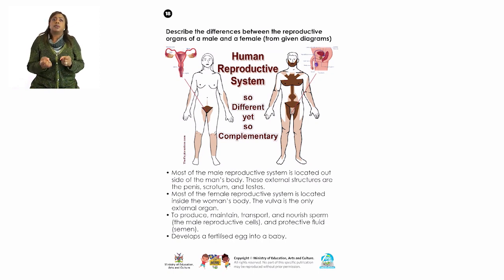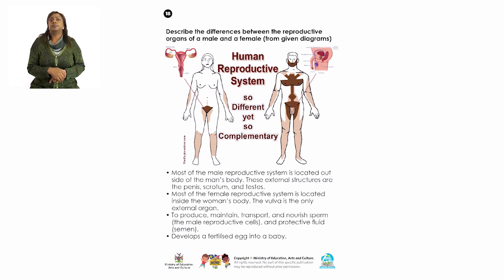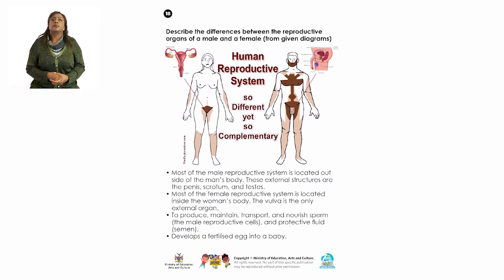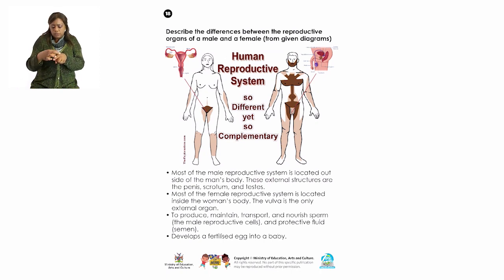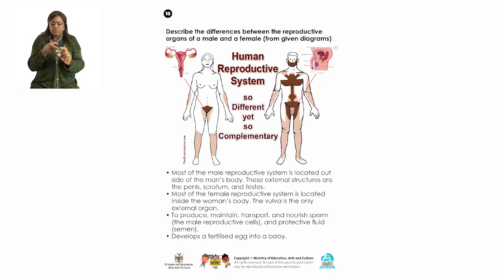Most of the female's reproductive system is located inside the woman's body. The vulva is the only external organ and it houses other organs, but it will be the only one visible from outside. The male reproductive system also produces, maintains, transports, and nourishes sperm cells, and adds a protective fluid known as semen. Once the semen has been deposited into the female's reproductive system, the female has another responsibility, which is to develop the fertilized egg into a baby.